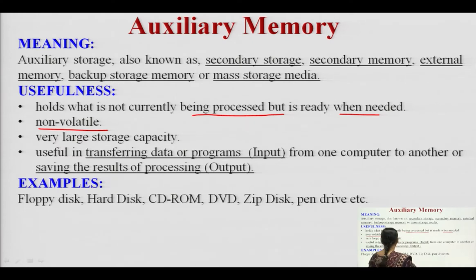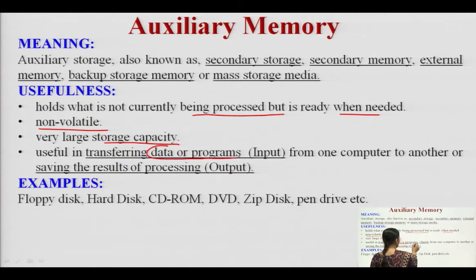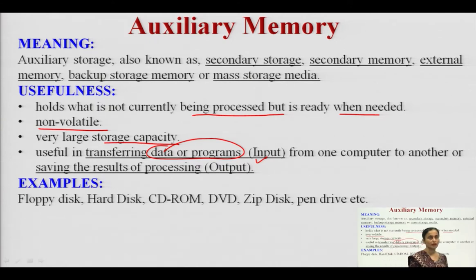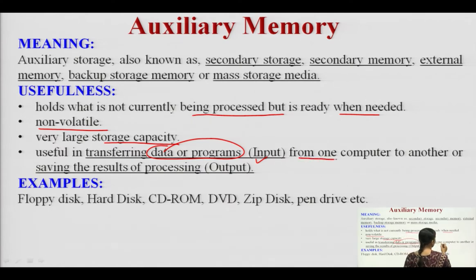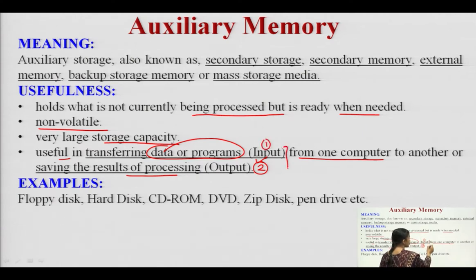Auxiliary memory has very large storage capacity — a large amount of data can be stored. It is useful for transferring data or programs as input, and we can store different types of data and programs, transferring them from one computer to another. We can also use it for storing results obtained after processing, that is the output. So both input and output can be stored in auxiliary memory.